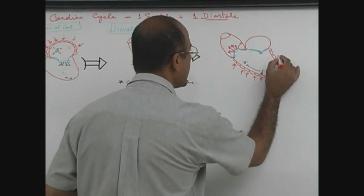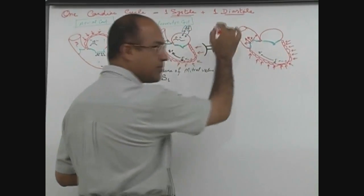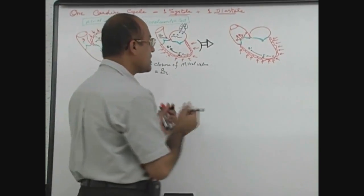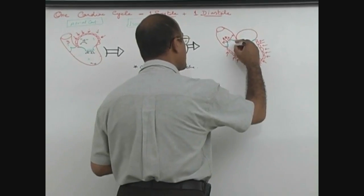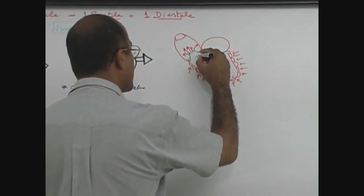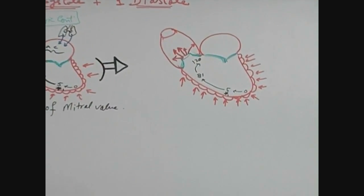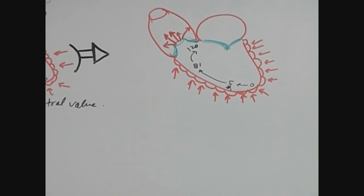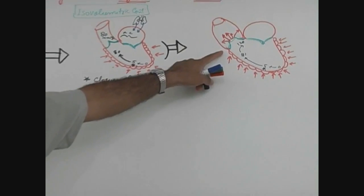Now aortic valve is open, so blood volume from the ventricular chamber is constantly being pushed into aorta. Meanwhile, pressure in the ventricle may reach to the peak of 120.